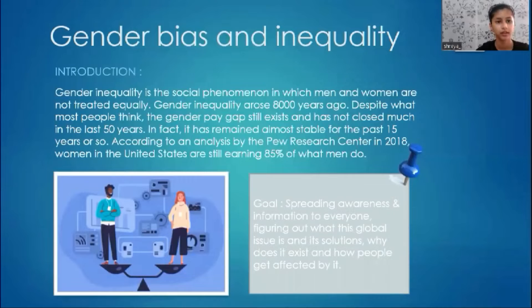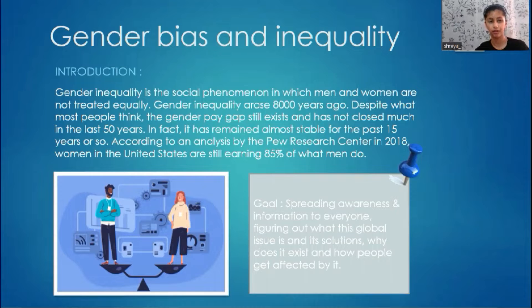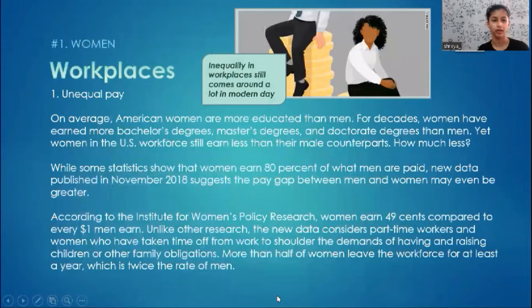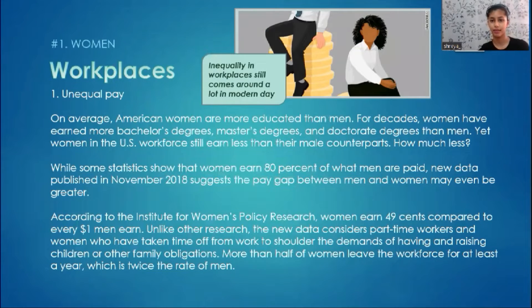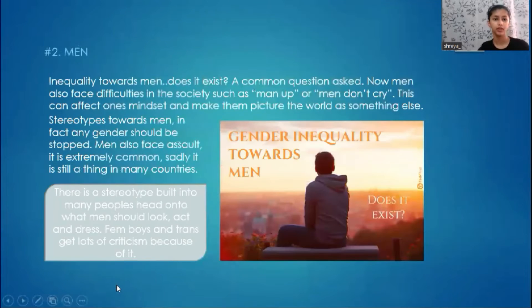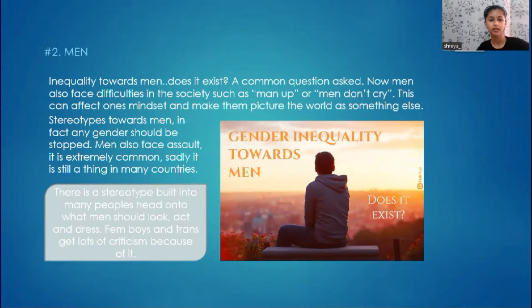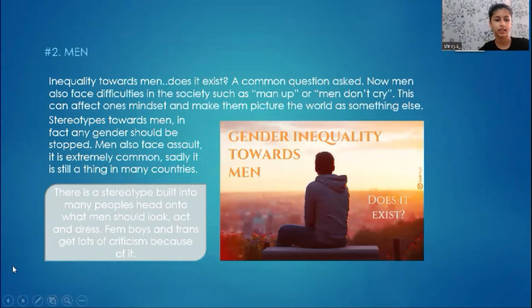Hello everyone, my name is Riah Gusty from 6B, and my exhibition topic is about gender inequality. Gender inequality is the social phenomenon in which men and women are not treated equally. On average, American women are more educated than men but get only 80% of what men are paid. There is also a stereotype built into many people's heads about what men should look like, act, and wear.